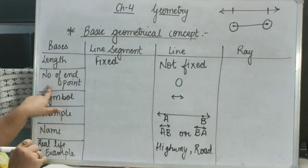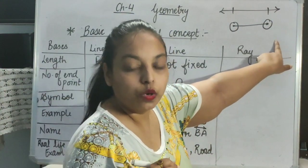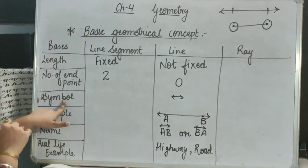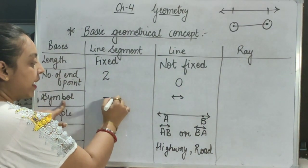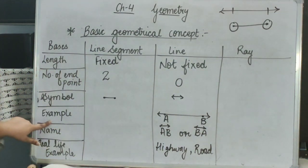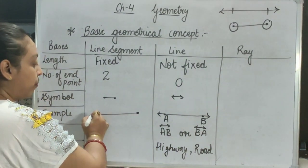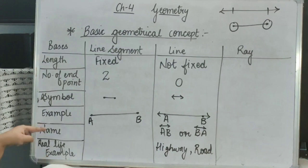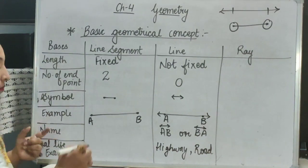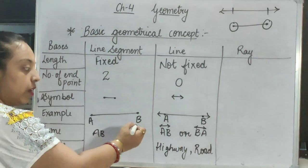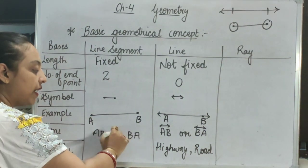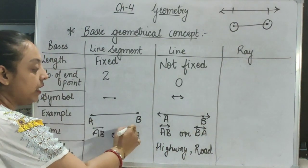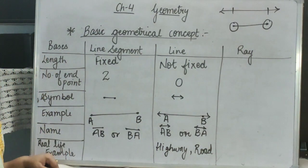How many number of end points? There are two. One and two. First starting point and second end point. What is the symbol? Symbol will be same. A line with two dots at both ends. How can we draw the example? Same. A line with two dots at both ends. And the points will be named with capital letter. How can we write the name? It will be AB or BA. But, same as line. We will use the symbol at the top of it to define that we are talking about line segment.